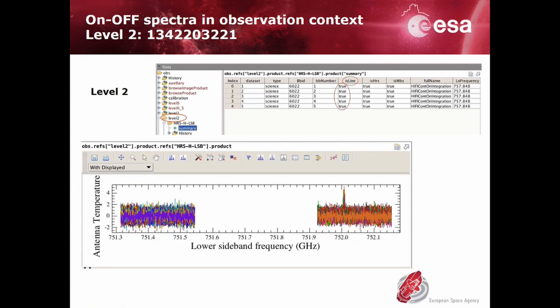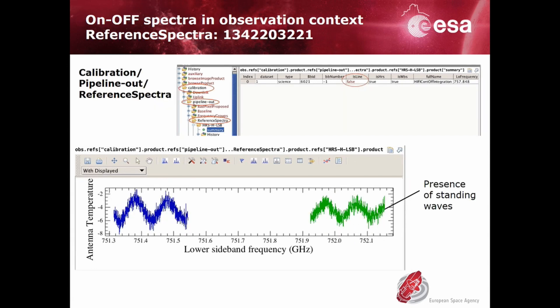Although both the source and the Off spectra are processed by the Level 2 pipeline, only the source data is retained in Level 2. However, the Off spectra are nevertheless kept and stored in the calibration pipeline output reference spectra product. It is important to examine the reference spectra because they can indicate the presence of line emission in the Off spectra, which could affect the on-source spectra. Note that the reference spectra are most often affected by standing waves because they do not benefit from the same instrument drift cancellation scheme as the on-spectra. In essence, it is the subtraction of the Off spectra from the on-source spectra that allows the cancellation of those artifacts.